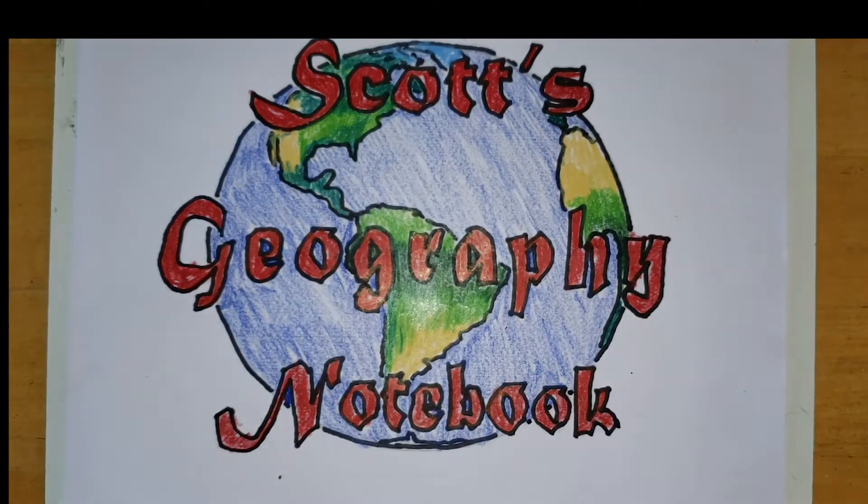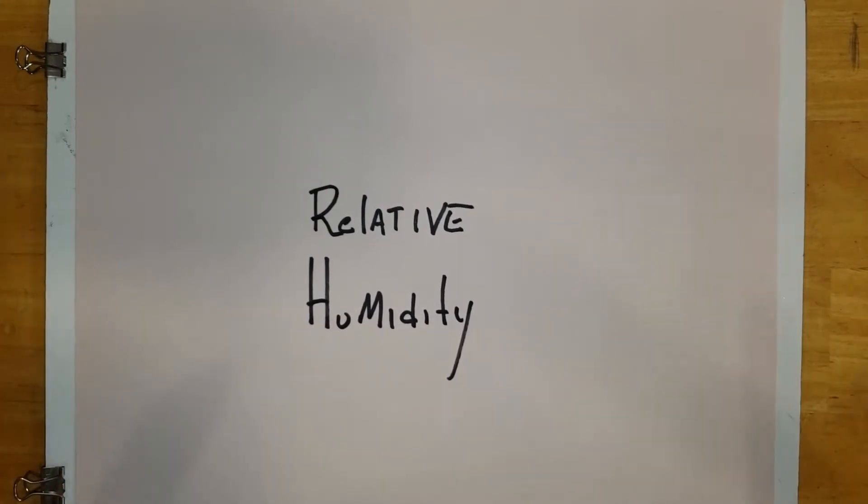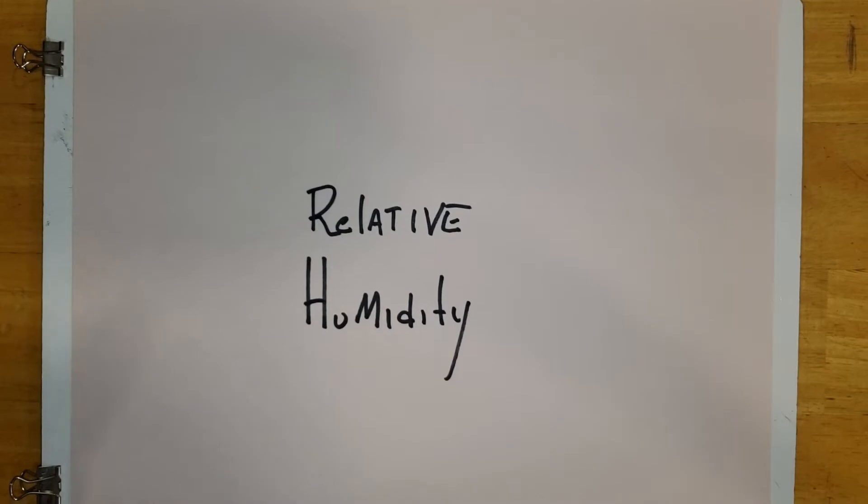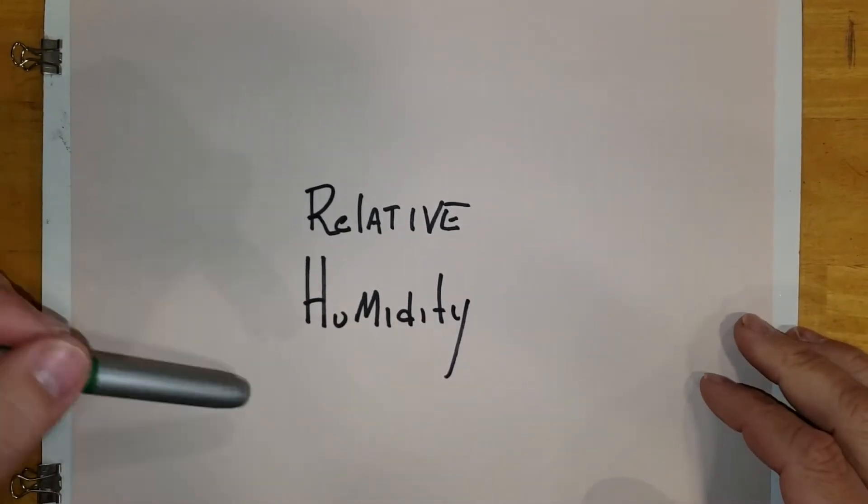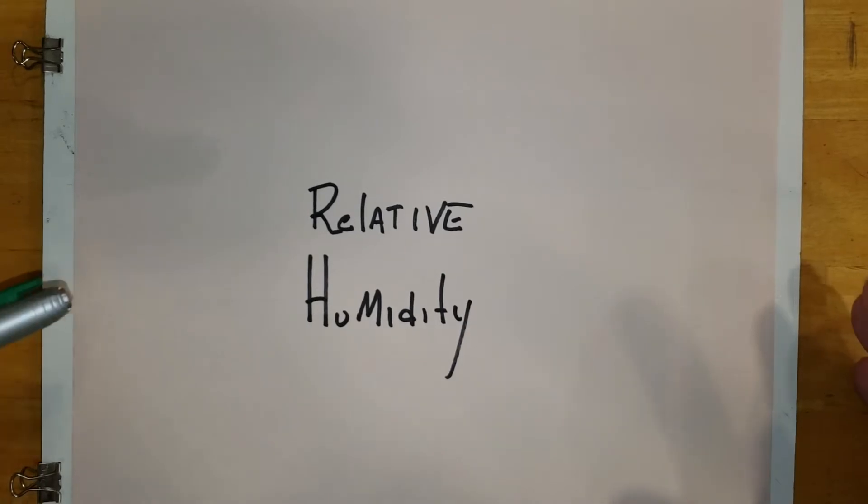In Scott's Geography Notebook, I'm going to talk about relative humidity. Relative humidity is a relative term because when we're thinking about the humidity in our atmosphere, it really depends on two different things, and we need to understand these two different ideas.